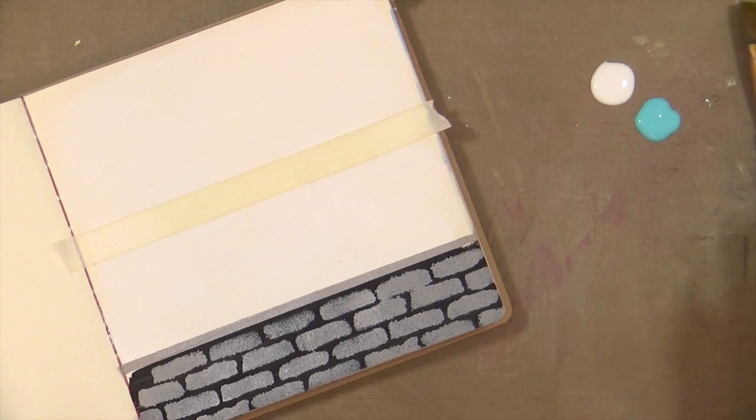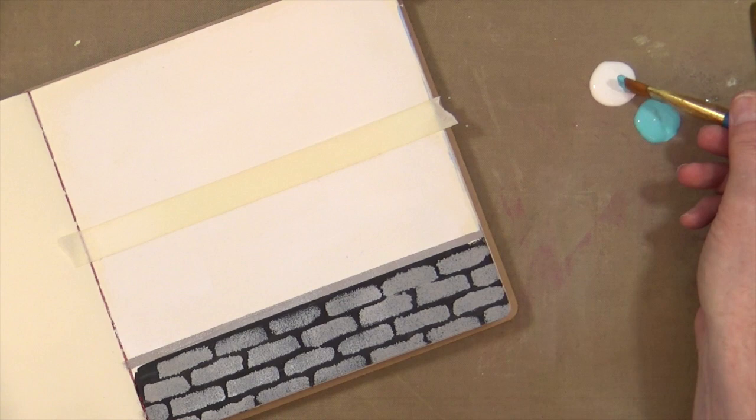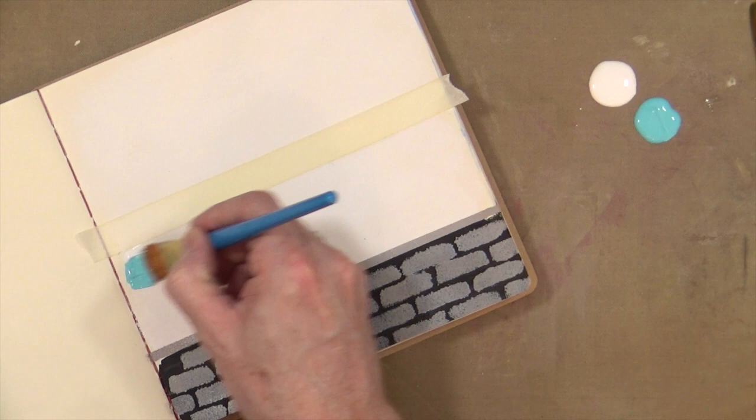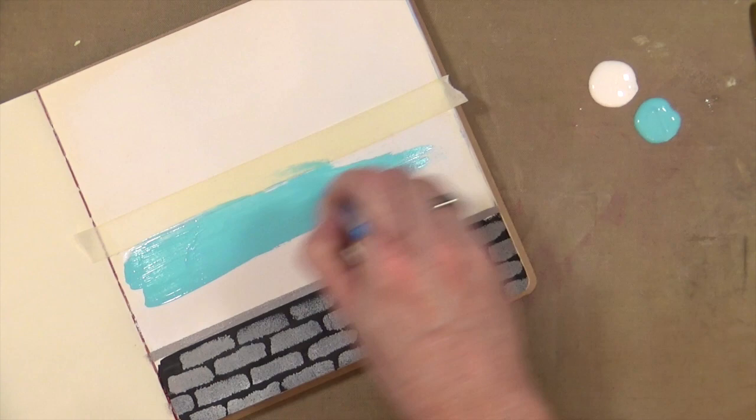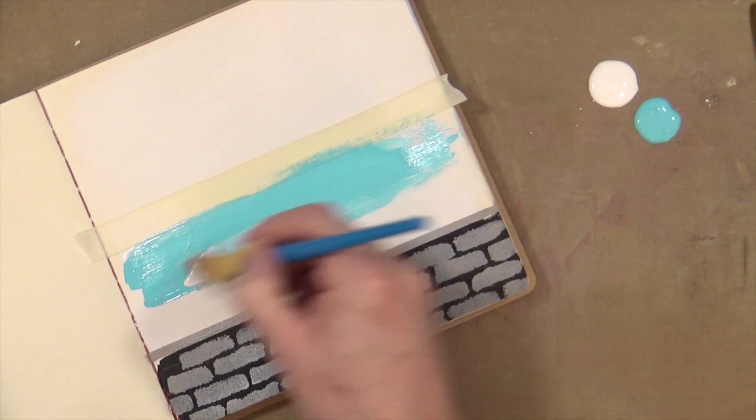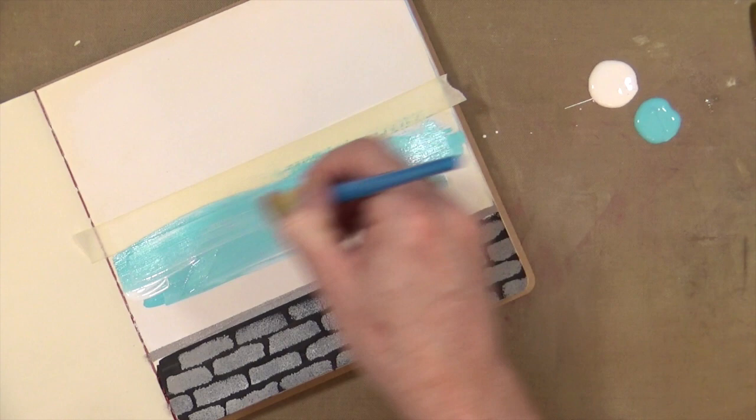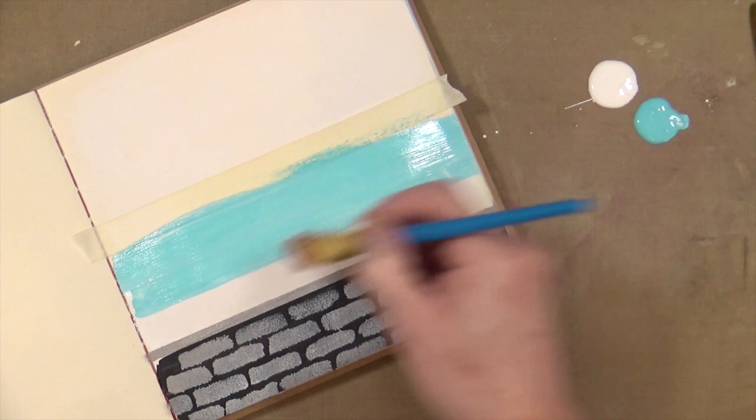What I'm going to do is pick up the blue and then just lightly pick up a little bit of the white as well on the corner. Then I'm going to just pull it across and blend in the white as I'm going. I'm trying to do it in a linear pattern going across the page.